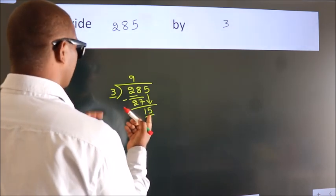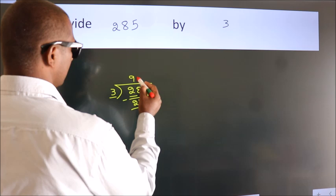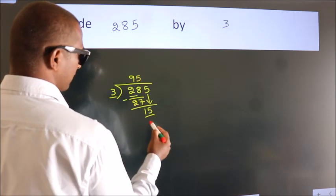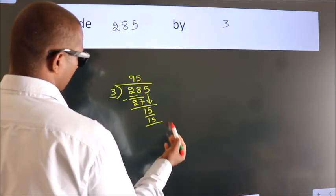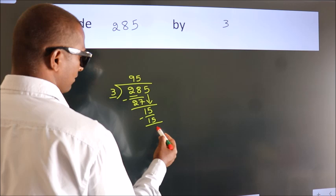When do we get 15? In the 3 table. 3 fives is 15. Now we subtract. We get 0.